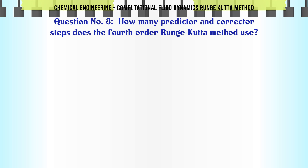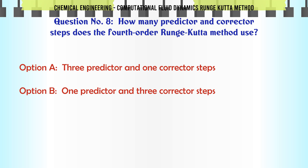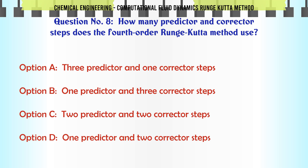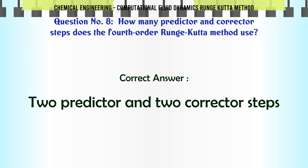How many predictor and corrector steps does the 4th order Runge-Kutta method use? A: three predictor and one corrector steps. B: one predictor and three corrector steps. C: two predictor and two corrector steps. D: one predictor and two corrector steps. The correct answer is: two predictor and two corrector steps.